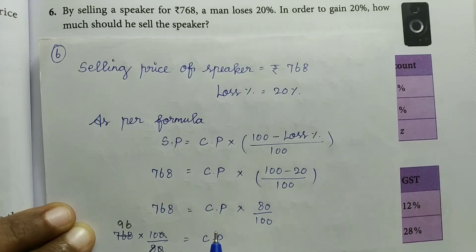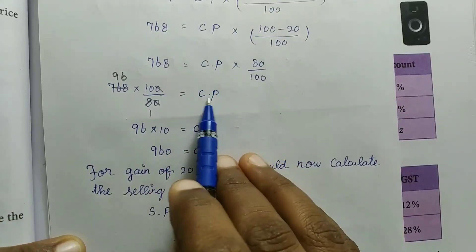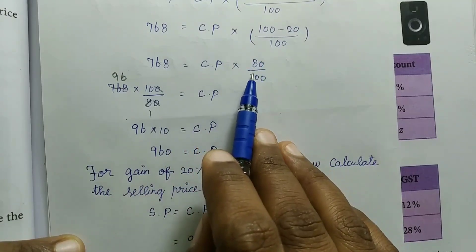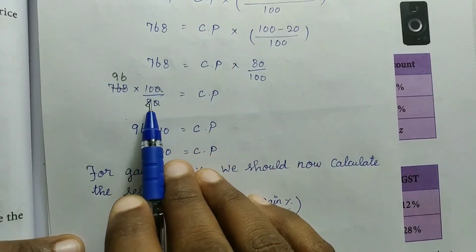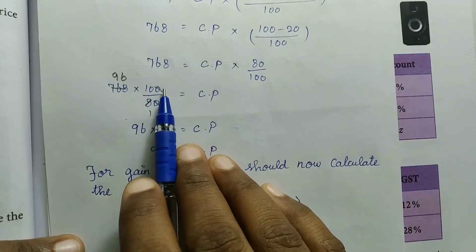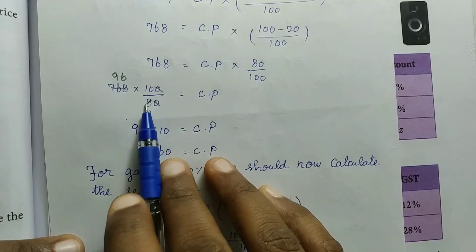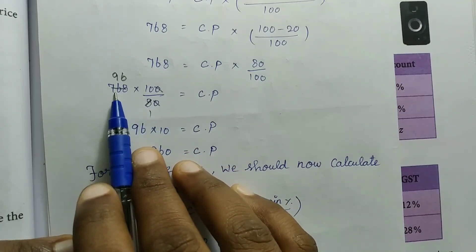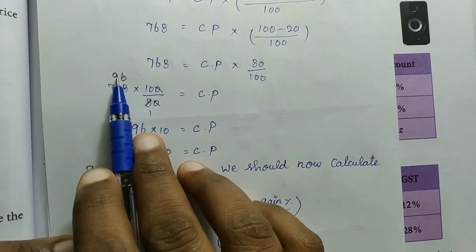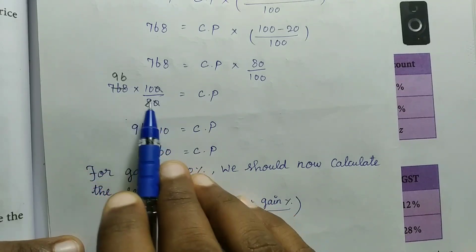We will rearrange to find CP. Moving the right-hand side value to the left-hand side, CP = 768 × 100 / 80. We can cancel to get 768 × 10 / 8.